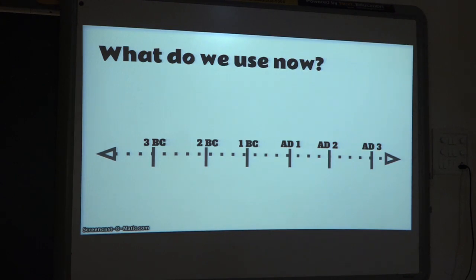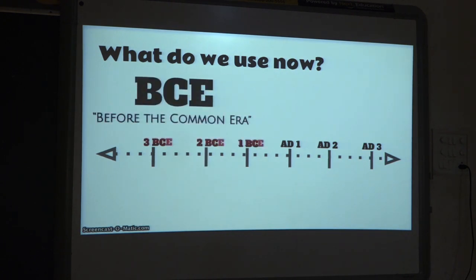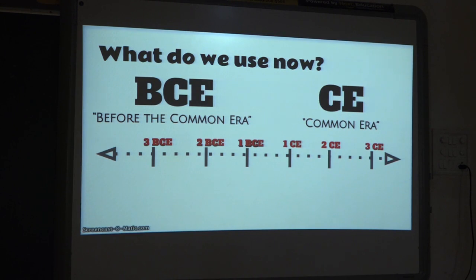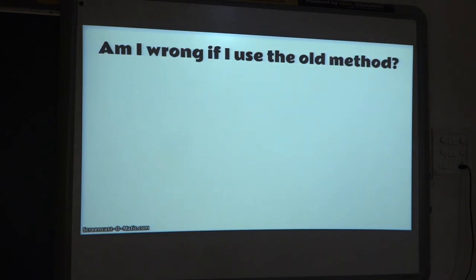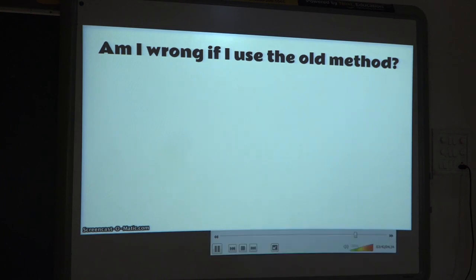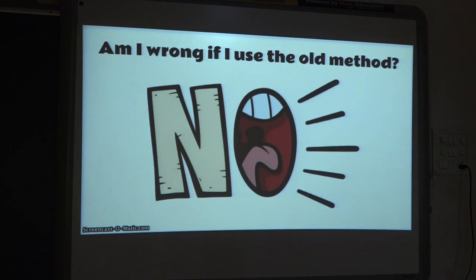So what do we use now? Since the later part of the 20th century, the use of BCE and CE has been popularized. Authors who wanted a more secular approach began referring to the years formerly known as Before Christ as BCE — Before the Common Era. The years formerly known as AD are now referred to as CE — the Common Era. More and more books and scholars are using these terms. Are you wrong if you use the old method? No — since the years of both methods are equivalent, you will not be punished for using either method.